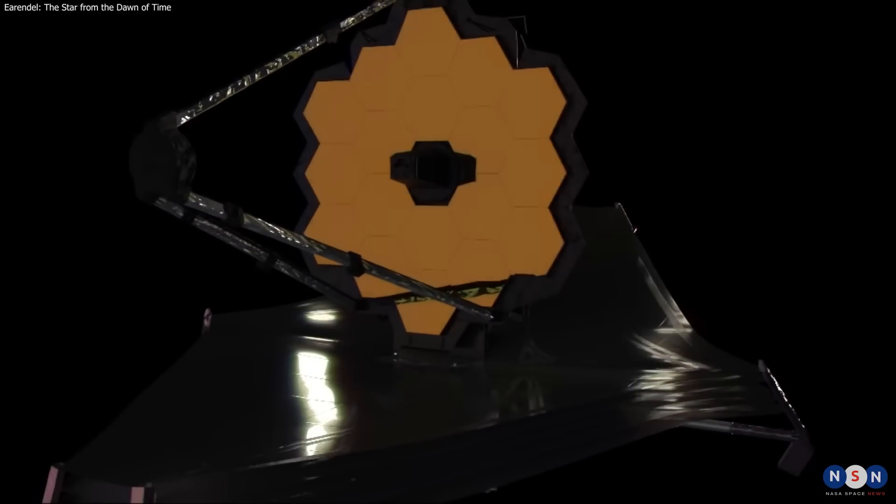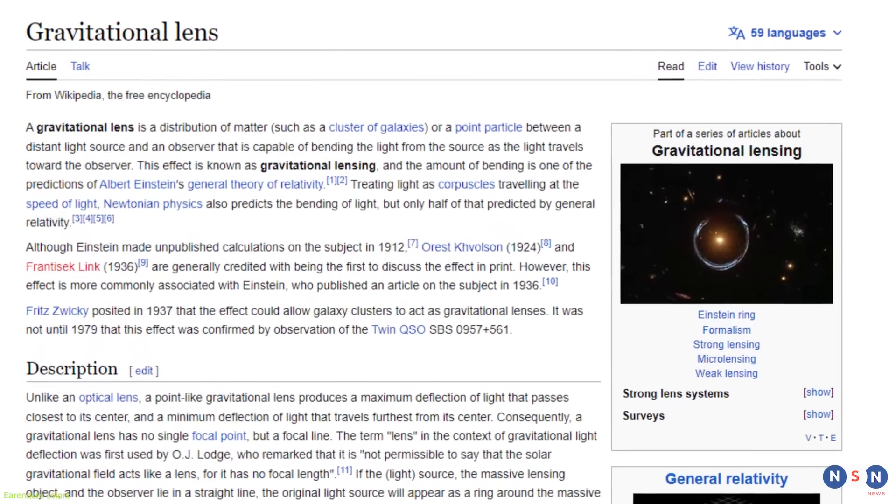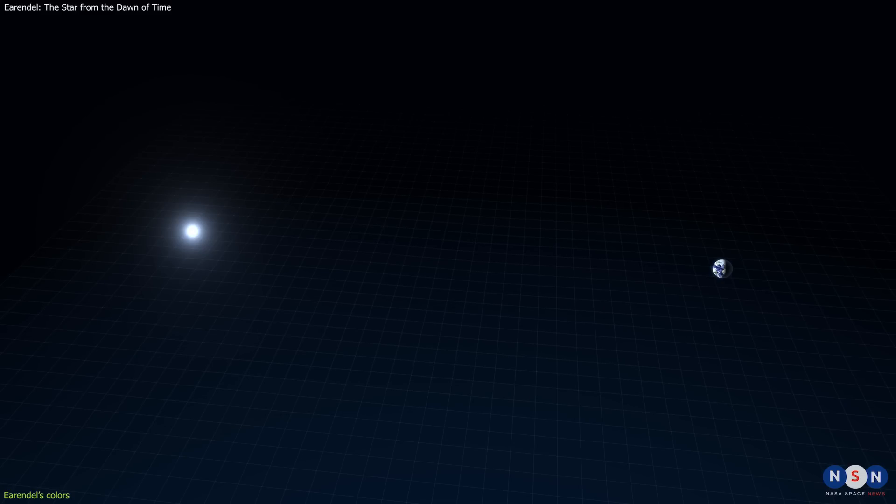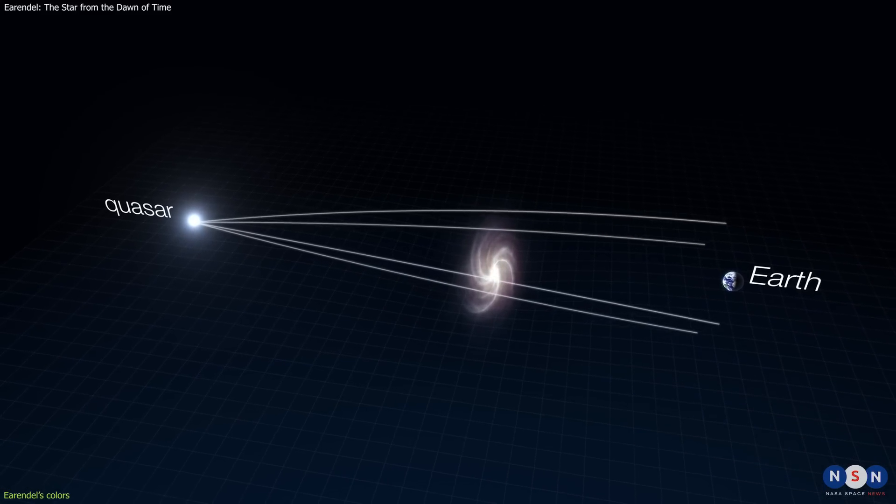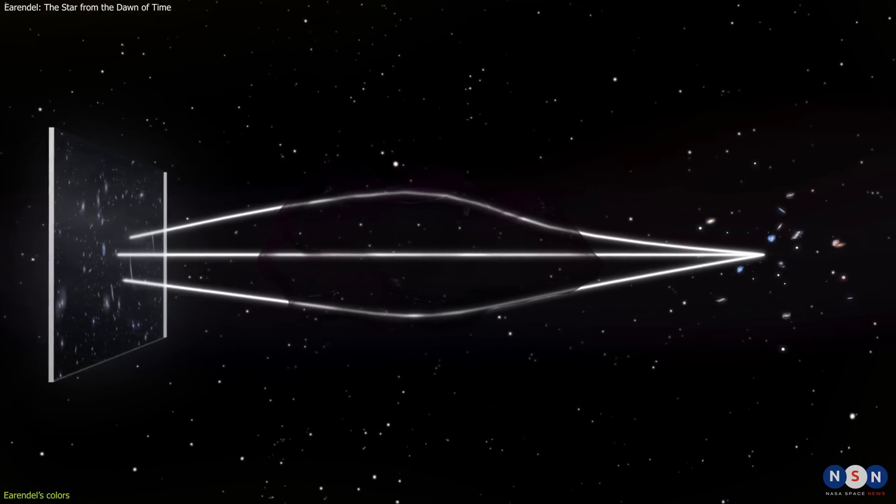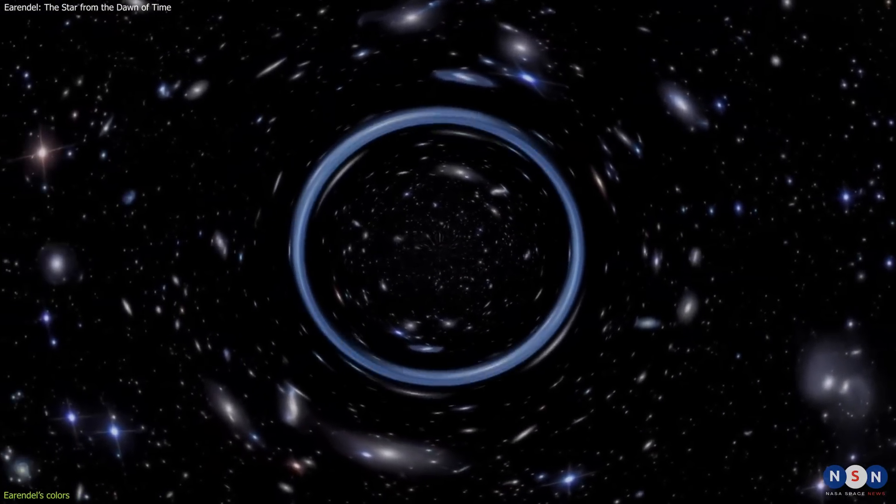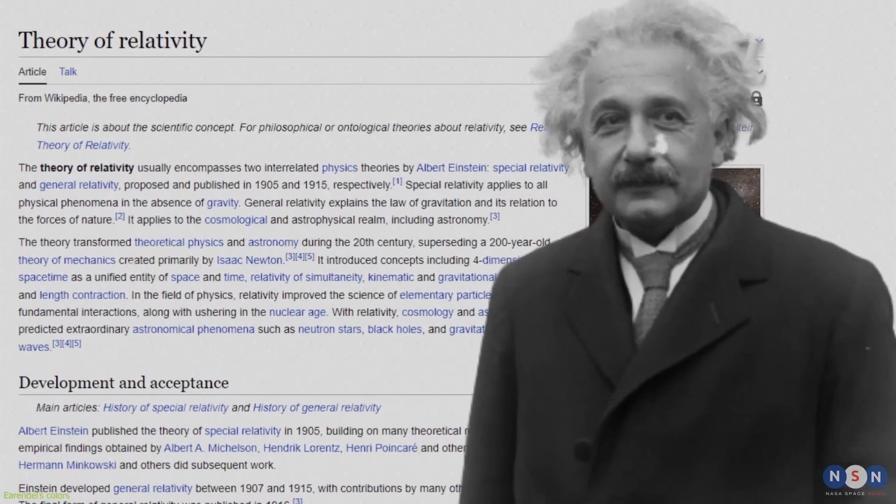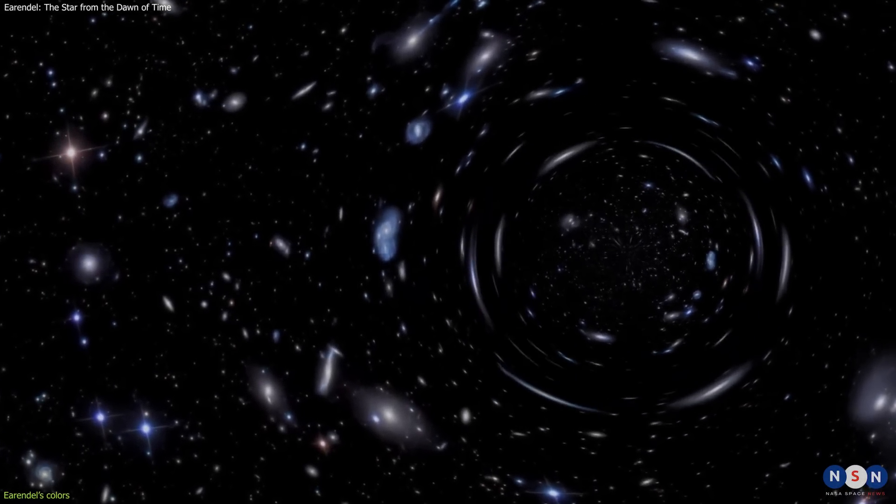But how did Webb find Earendel in the first place? The answer lies in a phenomenon called gravitational lensing, which is the key to observing Earendel and other distant galaxies. Gravitational lensing occurs when a massive object, such as a galaxy cluster, bends and magnifies the light from a background object that lies behind it. This happens because gravity warps the space around the massive object, creating a natural telescope that amplifies the light from the background object. This effect was predicted by Albert Einstein's theory of general relativity, and it has been observed many times by astronomers using different telescopes.